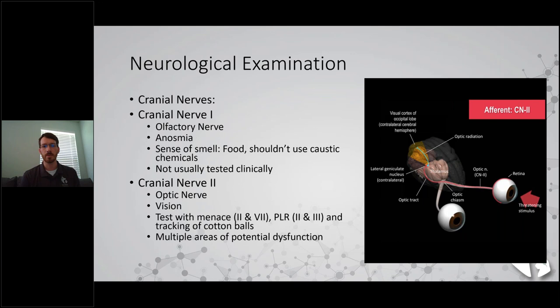Cranial nerve one is the olfactory nerve. Dysfunction means we've lost our sense of smell - clinically termed anosmia. We don't usually test for this clinically. Generally what you'd do is hide some food underneath things and try to test whether they can sniff it out without it being visually in front of them. We don't use caustic chemicals like alcohol on cotton balls, as that can stimulate different cranial nerves and is not a good test for sense of smell.